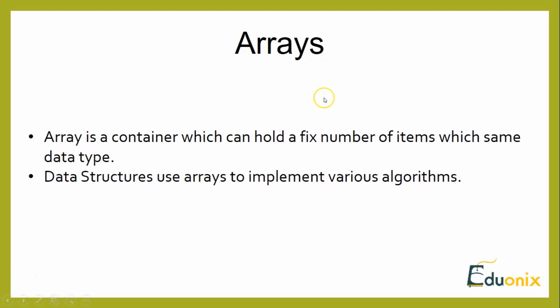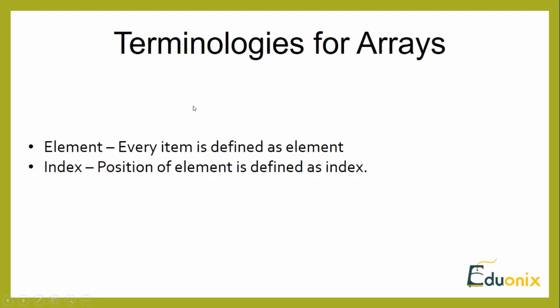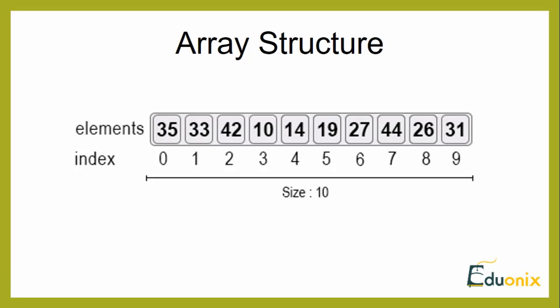There are certain terminologies followed for arrays. The first is element — every item stored in an array is called an element. The next is index — the position of an element in the array is considered its index position.